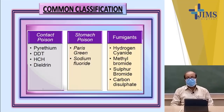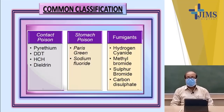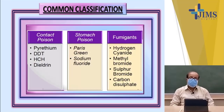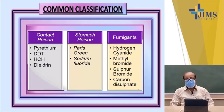This contact can happen either through objects where the insecticide spray has been applied and residues remain, or through pyrethrum aerosol spread in a space where the insect comes in contact with the droplets and gets killed. There are stomach toxins like Paris green and sodium fluoride, which also cause the death of an insect if ingested into its stomach. There are also fumigants — gases like hydrogen cyanide, methyl bromide, sulfur bromide, and carbon disulfide.